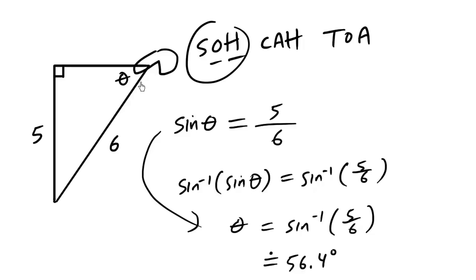So when you see some unknown angle and you have two pieces of information, we use trig SOHCAHTOA. Not only can we find side lengths, we can also find the unknown angle.